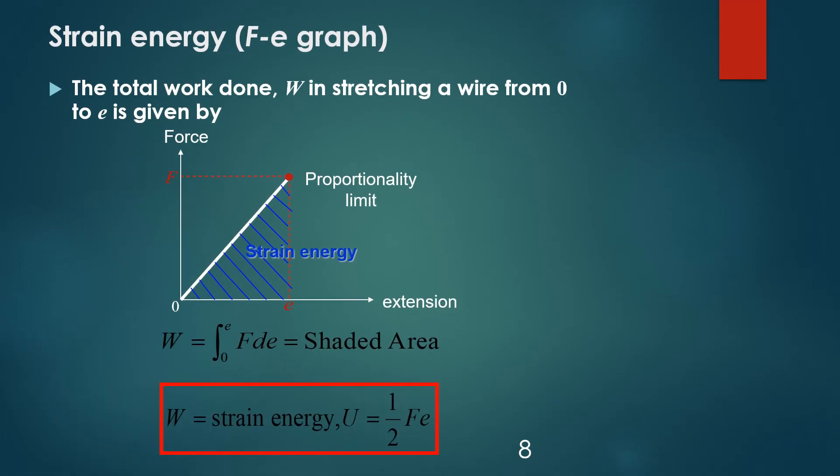Our next lesson is about strain energy from the force-elongation graph. The total work done in stretching a wire is represented by the graph. The strain energy is the shaded area under the graph, and from the analysis of this graph we get the formula: strain energy U equals one-half times F times e.